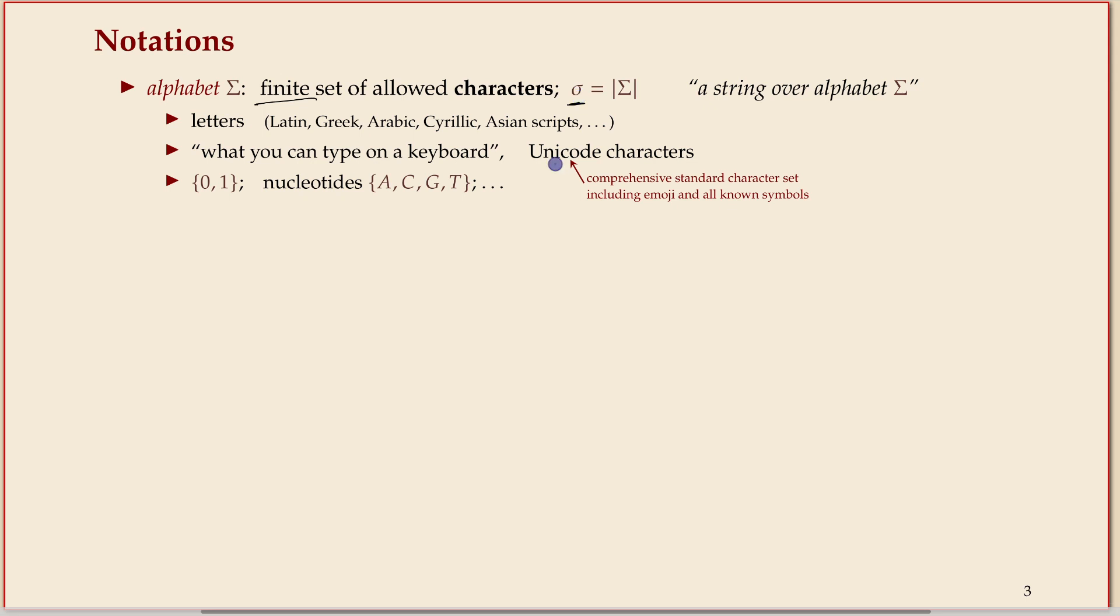It can also be all Unicode characters. That's also an alphabet that's relevant in many cases. I think there are around 130,000 Unicode characters. All your favorite emoji, all scripts that were ever written on Earth, plus Klingon and all the useful stuff. But alphabets can also be small, like just binary or the nucleotides in your DNA. Many of the algorithms will have to deal with several parameters: the length of the string but also the size of the alphabet.